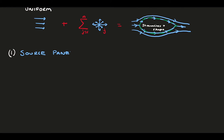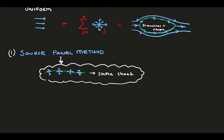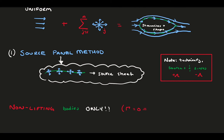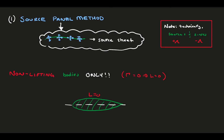Let's start first with the source panel method. This is a method that recreates the shape of a body using a source sheet, or a series of closely spaced sources and sinks. It's important to note that although the source gets the recognition in the name, technically a sink could also be used here, because the sink is the same as a source but with a negative strength. Also keep in mind that the source panel method is purely for non-lifting bodies. There is no addition of circulation through these flow elements, therefore no lift. Unfortunately, this limits us to primarily symmetric bodies with no angle of attack, and the use is rather limited, while the concepts are valuable.